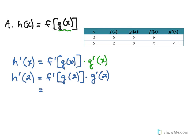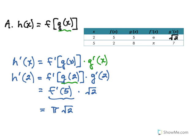Starting with the inside: g of 2. From the table, g of 2 is 5, so we have f prime of 5. Also, g prime of 2 is that square root of 2 we just noted — and we need it now. So g prime of 2 equals square root of 2. And f prime of 5 is pi according to the table. So we have pi times square root of 2 as our answer for this first problem.